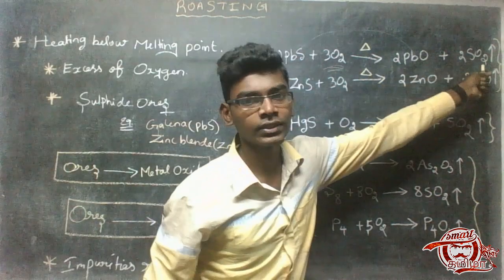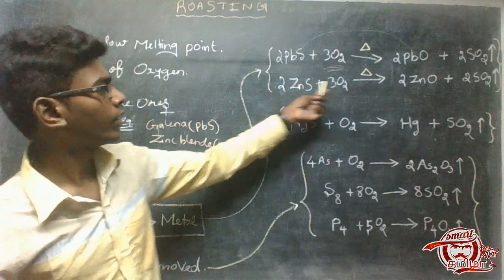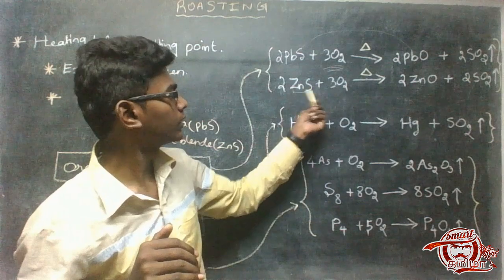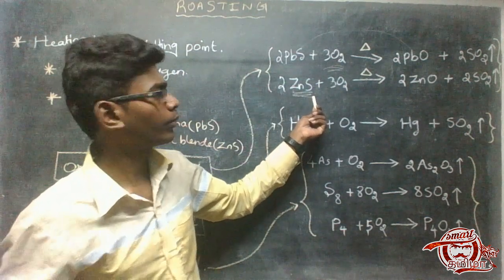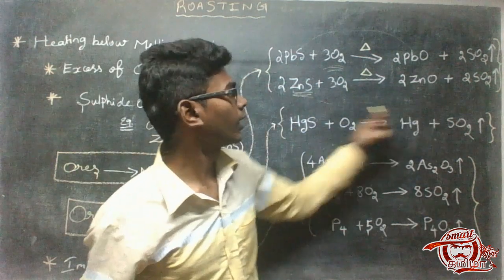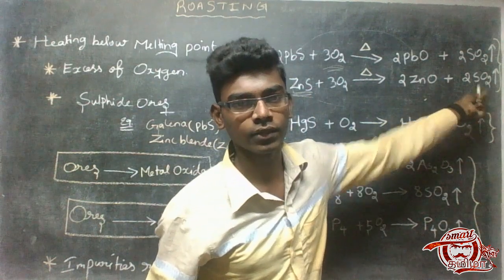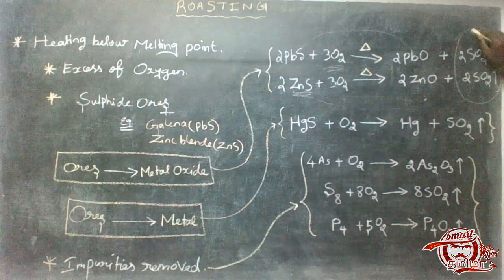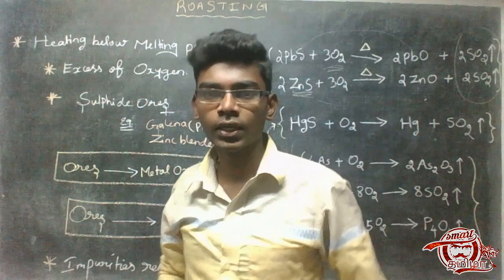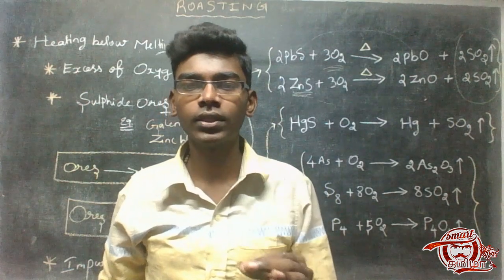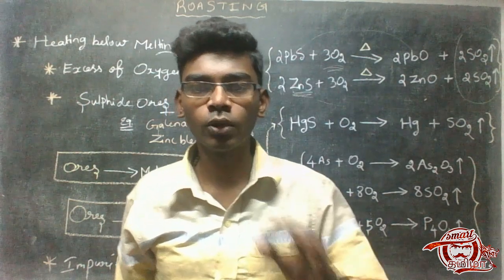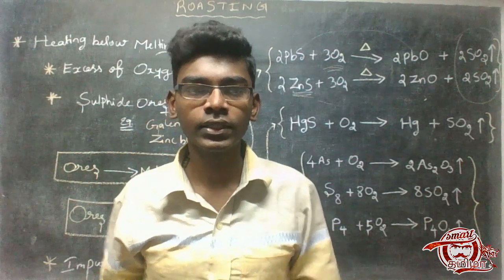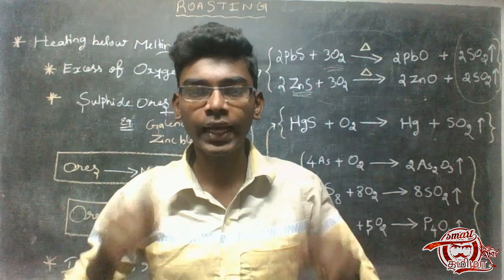What is the release of Sulfur Dioxide? For the zinc blend, the oxygen reactor is at a low temperature — the melting point is low, the temperature is low — zinc oxide is formed and sulfur dioxide is released. Sulfur Dioxide is released. That is why there are many problems in the roasting process, but in modern technology the Sulfur Dioxide is managed.